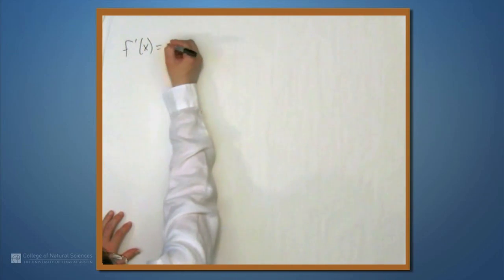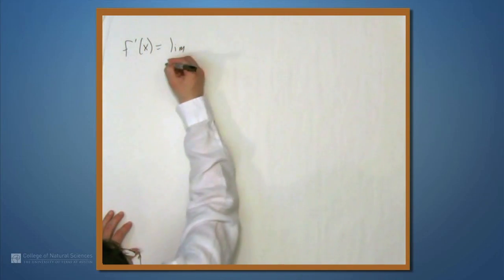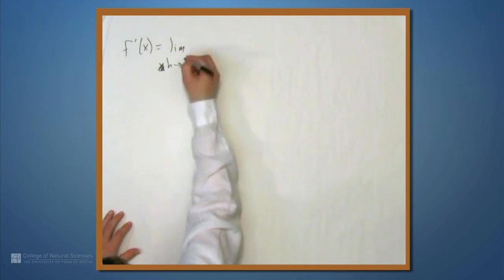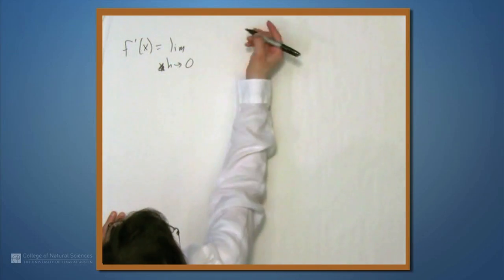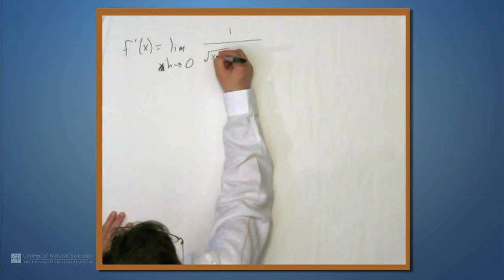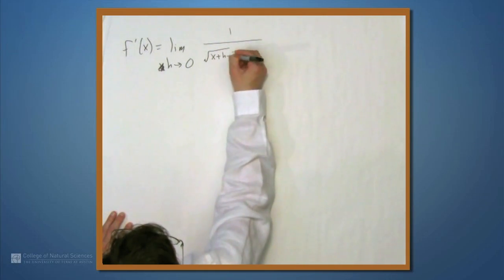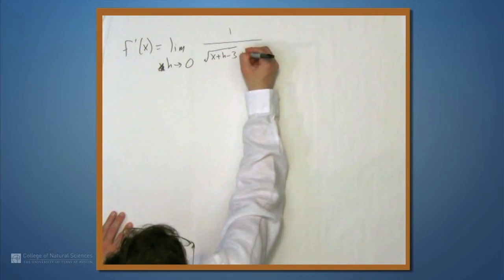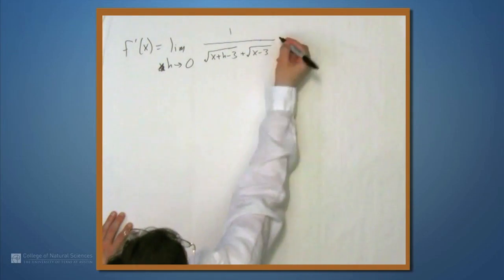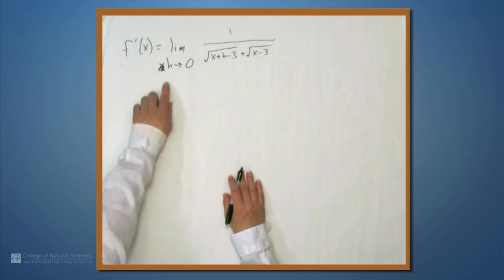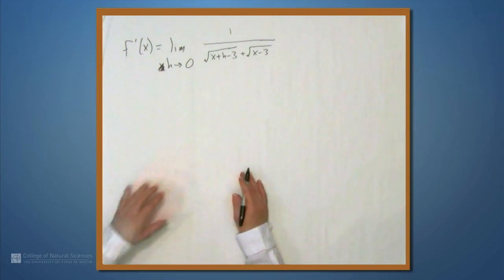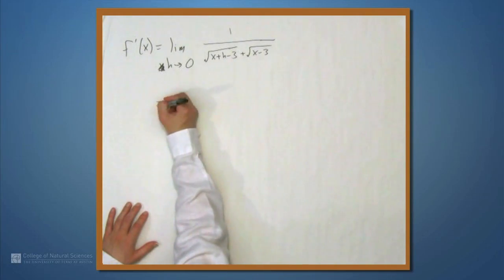So, f prime of x is, by definition, the limit as h approaches 0 of the expression that we just got, which is 1 over the square root of x plus h minus 3 plus the square root of x minus 3. Well, what happens as h goes to 0? We don't have any problems in here, we can just plug in 0 for h.